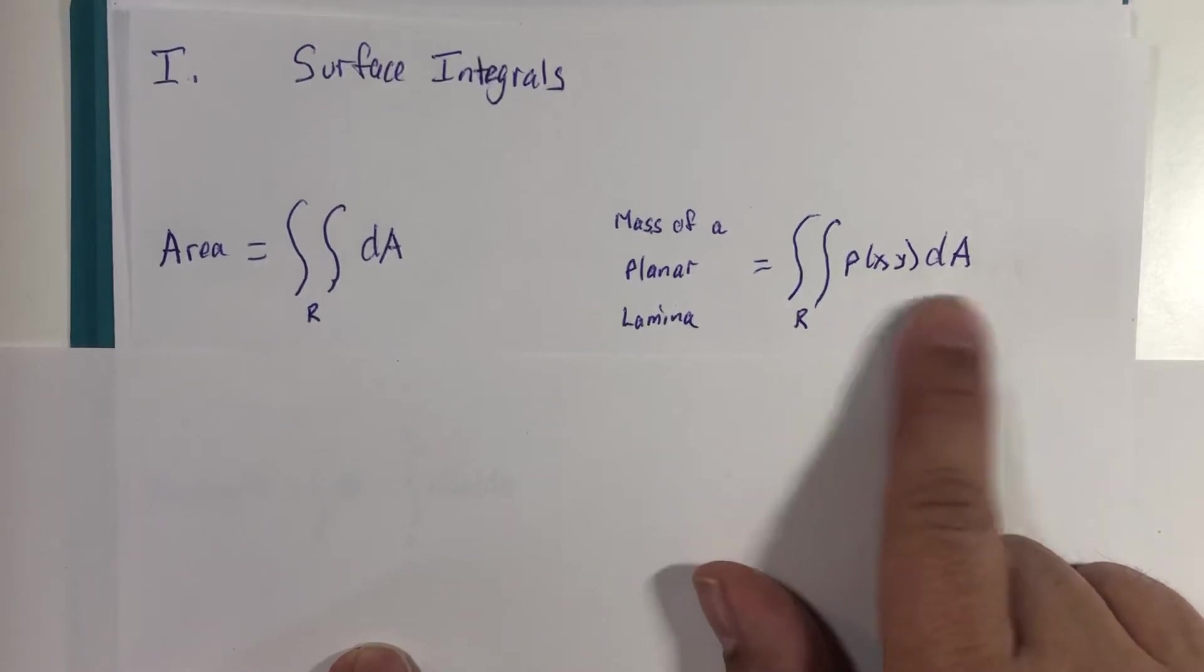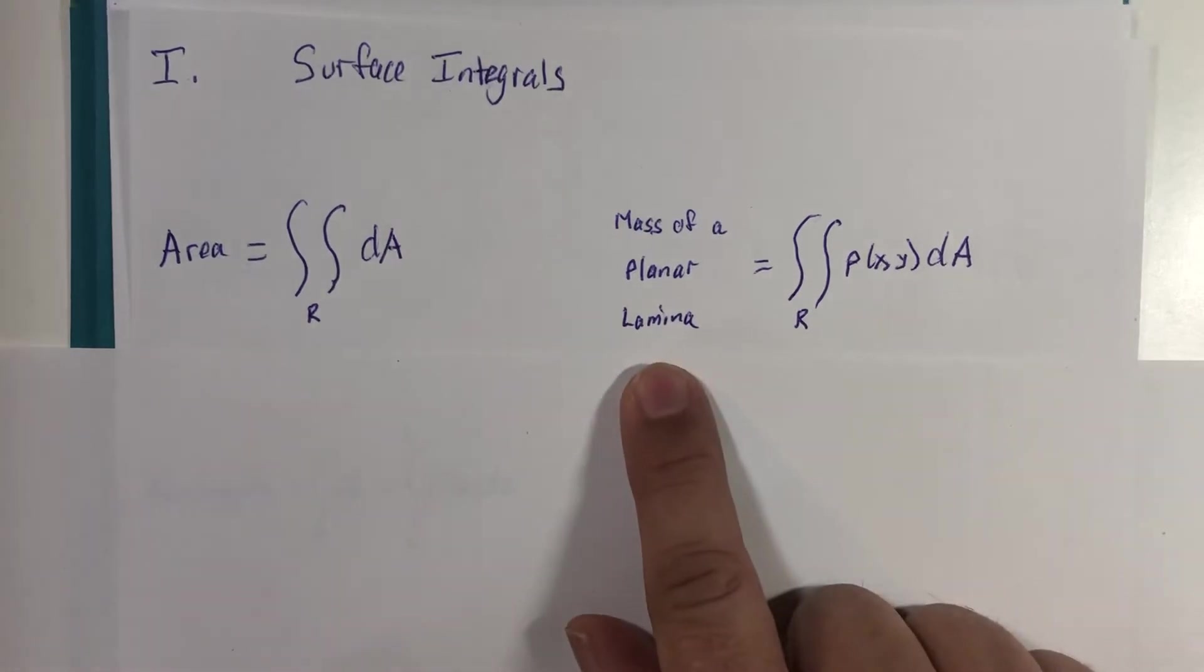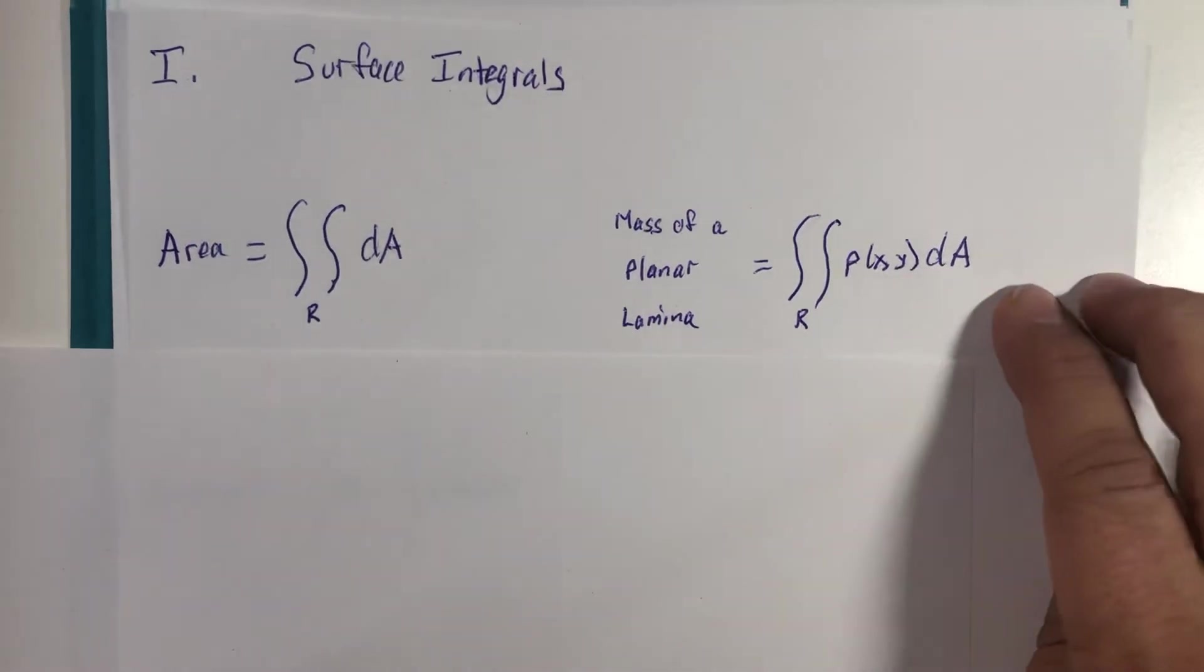This density times area will give you a unit of mass, and summing them all up gives you the mass of the planar lamina. So it's on the xy-plane, densities in terms of x and y.